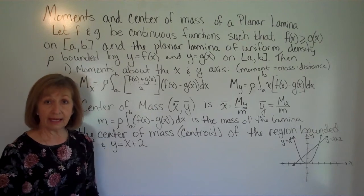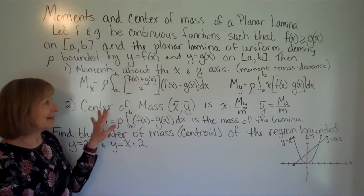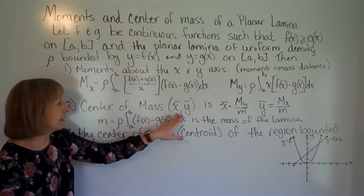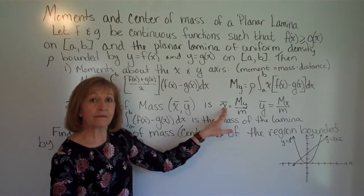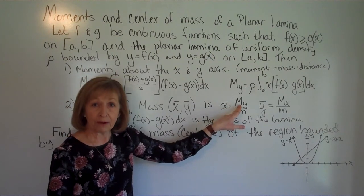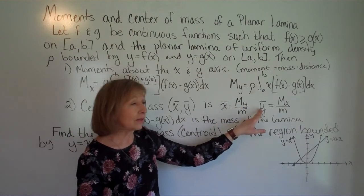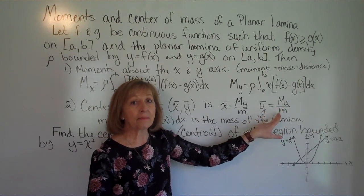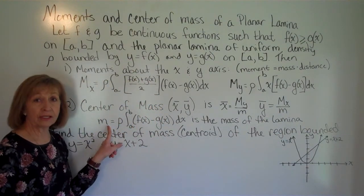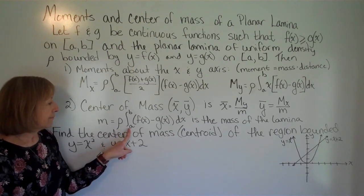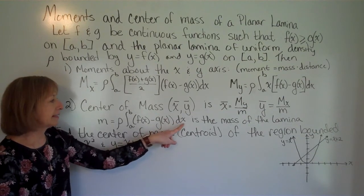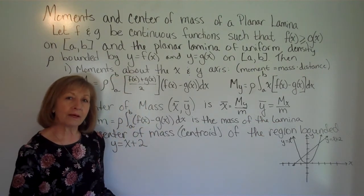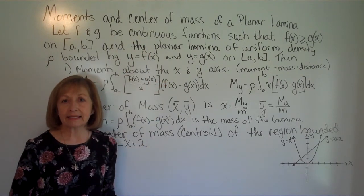Now that we have the moments about the x-axis and the y-axis, the center of mass (x-bar, y-bar) is: x-bar equals the moment about the y-axis divided by the total mass, and y-bar equals the moment about the x-axis divided by the mass. The mass is your density rho times the definite integral from a to b of [f(x) − g(x)] dx — top function minus bottom function.